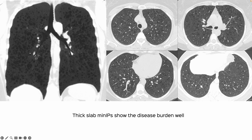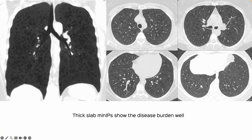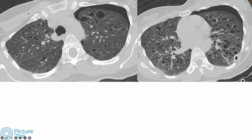Thick slab minips — anywhere between 60 to 100 millimeter minips — make a real difference. You have to do this on soft tissue windows, not the HRCT windows. They give you a sense of the burden of cystic disease from a single image, which is harder to appreciate from just axial or coronal images. I now do this for most cystic lung disease patients to get one snapshot of what is going on. Patients may present with pneumothorax, though completely asymptomatic individuals also exist.